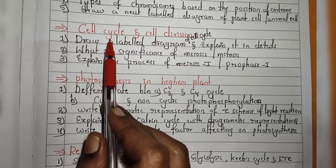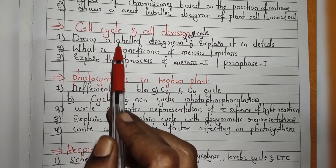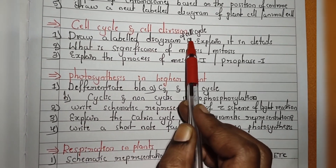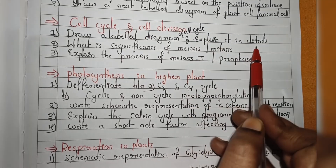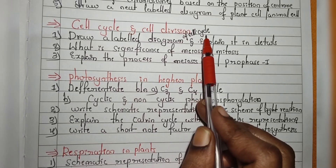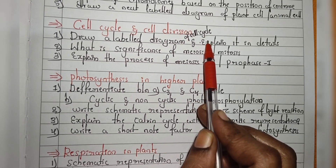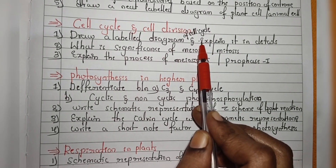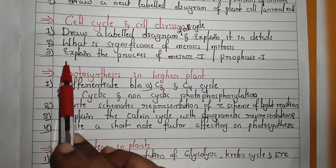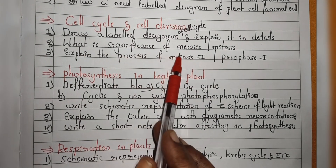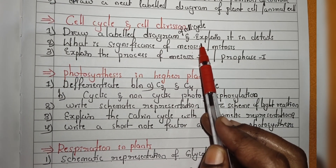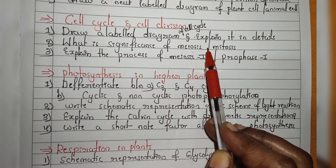Next chapter is Cell Cycle and Cell Division. From this chapter, questions will arise on three main topics. First, draw a labelled diagram of the cell cycle and explain it in detail — you have to write the cell cycle diagram and explain G1 phase, S phase, G2 phase, prophase, metaphase, anaphase, and telophase. Second topic is the significance of meiosis or mitosis — they may ask about meiosis or mitosis significance, as this is very important and has been asked many times.